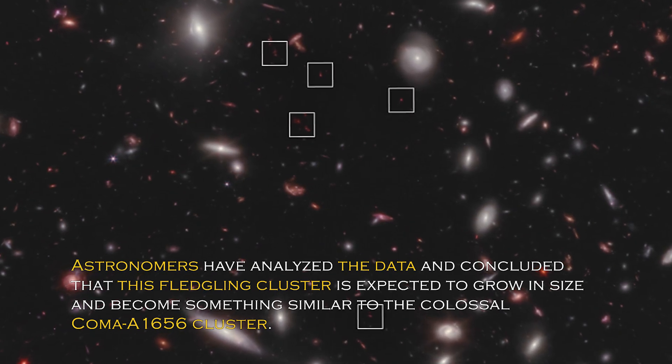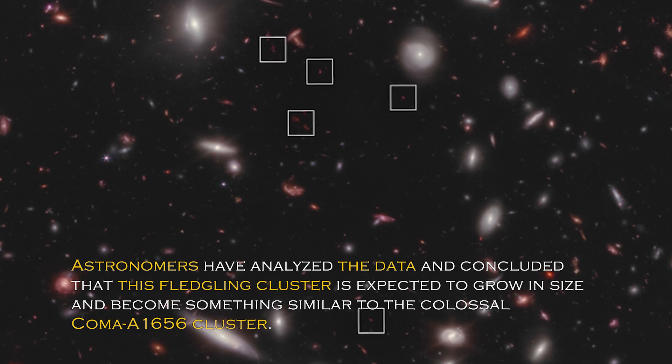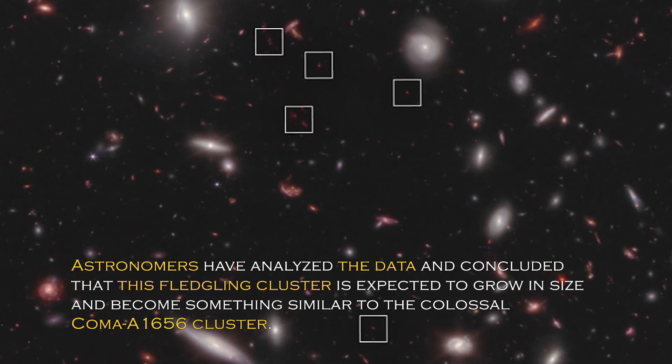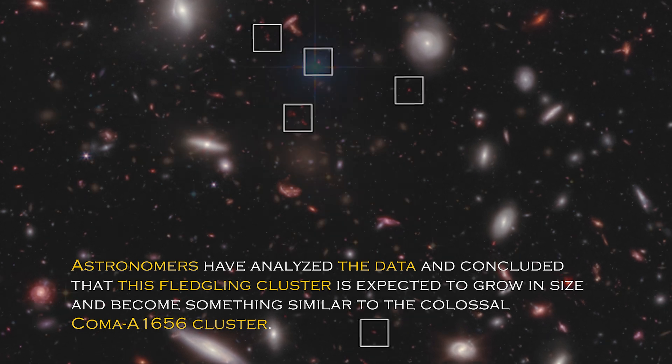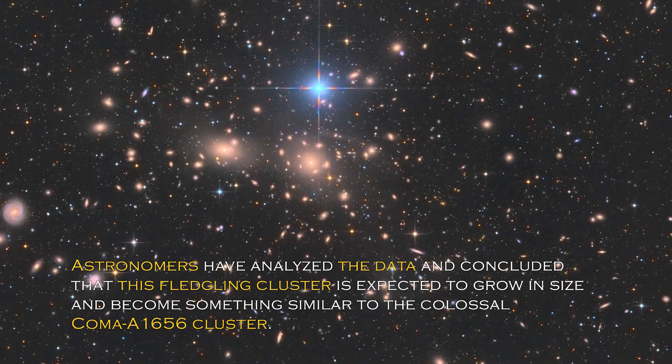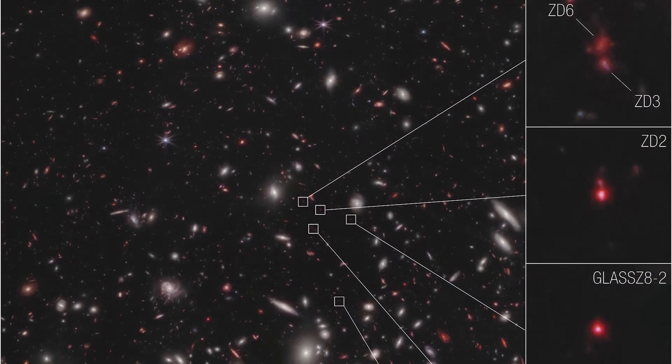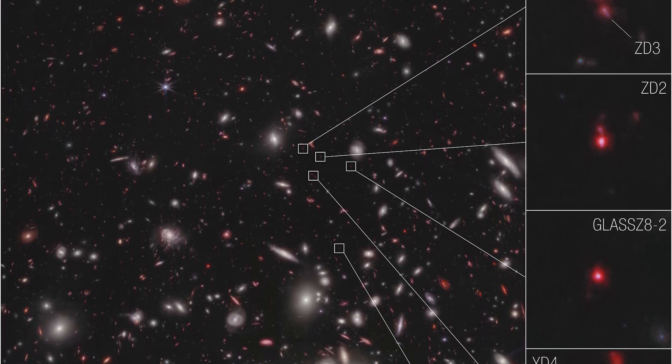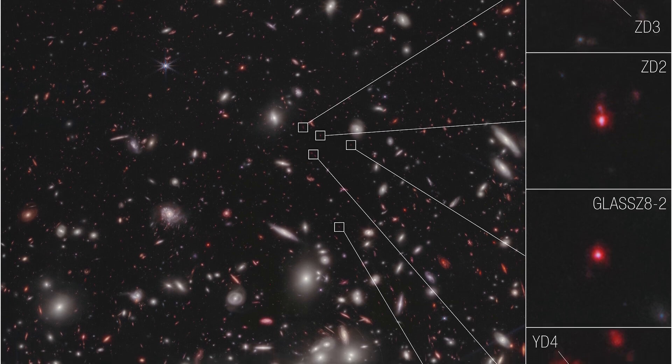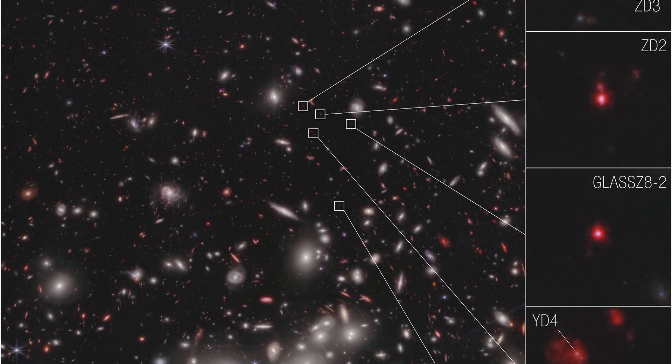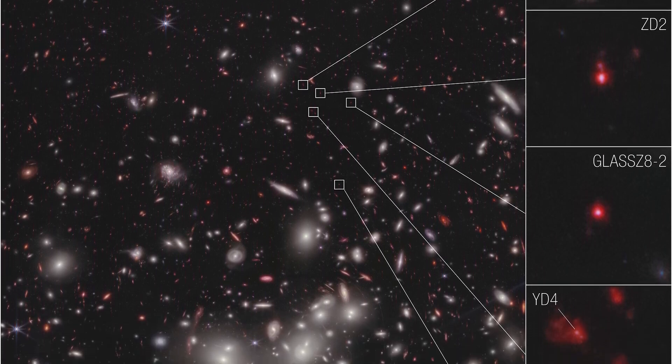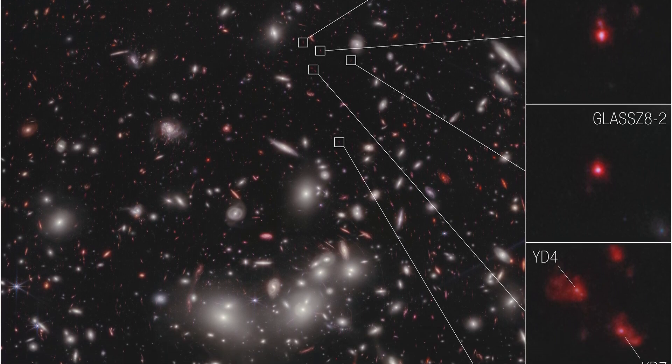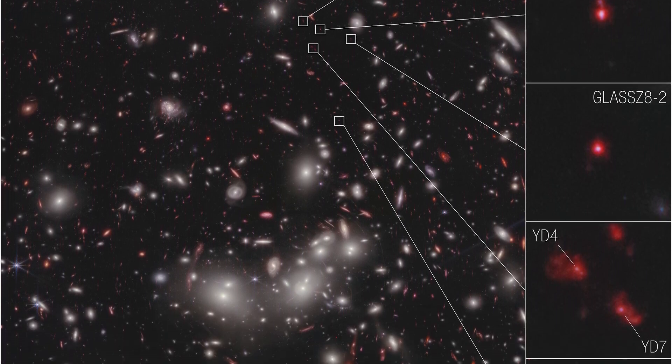Astronomers have analyzed the data and concluded that this fledgling cluster is expected to grow in size and become something similar to the colossal Coma cluster. The place where all this is taking place is unique and special, as it is in an area of accelerating galactic evolution. Now researchers can measure the velocities of these seven galaxies, which gives them the confidence to confirm that they are bounded together in a protocluster.